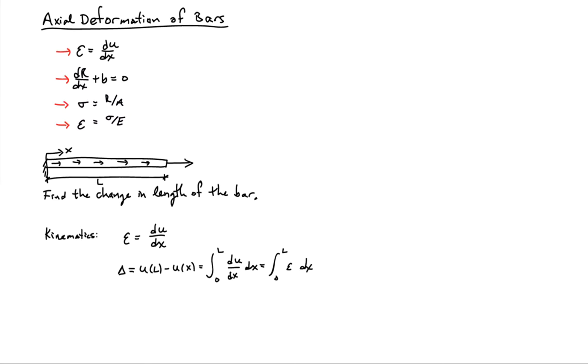So let's first start by looking at the kinematic equation. If I look at the kinematic equation, it says the strain is equal to the derivative of the displacement. If I integrate the rate of change of the displacement from zero to L by the fundamental theorem of calculus, I find that that's equal to u of L minus u of zero, which is the change in length, which I'll call delta in this case. So the change in length of the bar is equal to the integral of the strain over the entire domain of the bar.